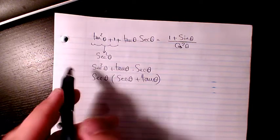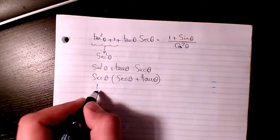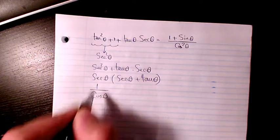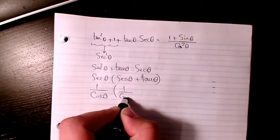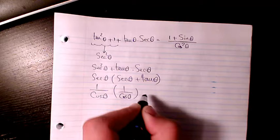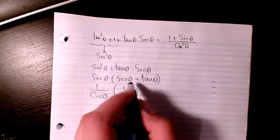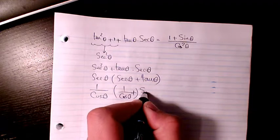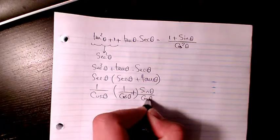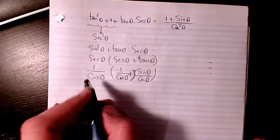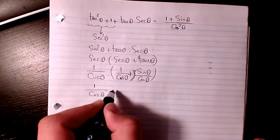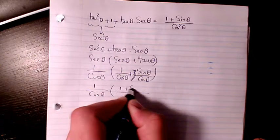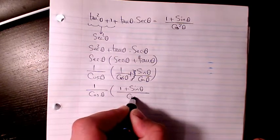As you see here, I factored out secant theta. Then I can convert to cosine and sine. Secant is the inverse of cosine, so secant theta equals 1 over cosine theta. And tan theta is sine theta divided by cosine theta. So I can write 1 over cosine theta times the quantity 1 plus sine theta divided by cosine theta.